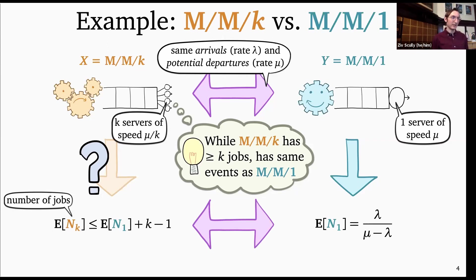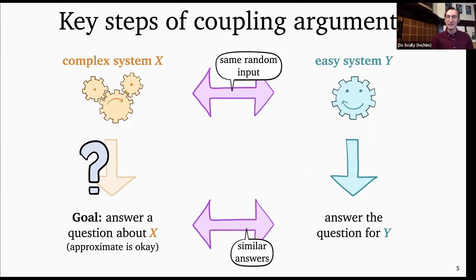Using that argument, you can work out the details to show that the mean number of jobs in the M/M/K is at most the mean number of jobs in an M/M/1 plus K minus one. Obviously, it's not too hard to get a more precise answer for the M/M/K, but this is a very simple, elegant argument that gives a nice bound. The main idea with coupling is that in general we're working with very complicated systems where you can't just write down the Markov chain and solve it easily — this sort of coupling argument becomes one of the only viable paths.